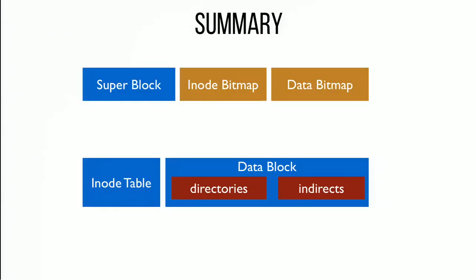The last structure is the super block. Since you can configure your file system in different ways — different numbers of inodes, different numbers of data blocks — the file system needs to know how you configured it when it boots up. The super block tracks all of that: block size, where everything is. Our full static structure summary: super block, inode bitmap, data bitmap, inode table, and data blocks — which can be used for files, directories, and indirect pointers.